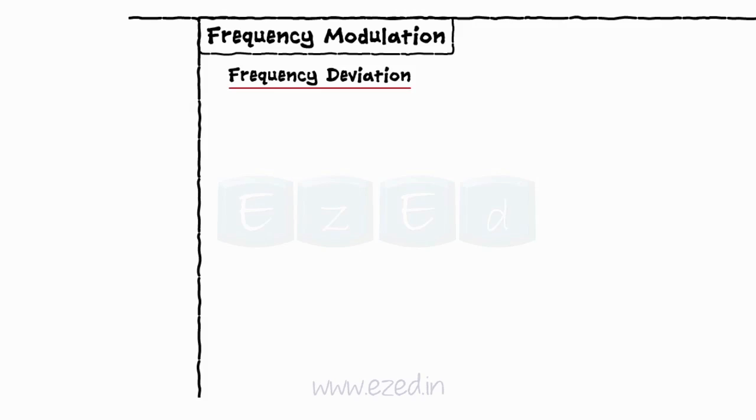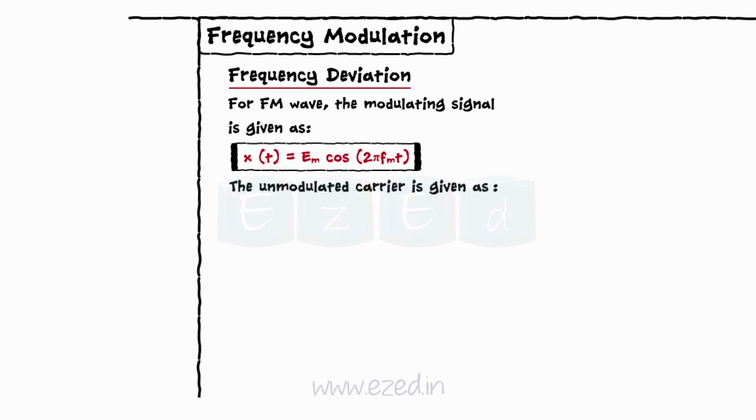The modulating signal is given as Xt equals Em cos 2 pi fm into t. The carrier signal is given as Ec equals A into cos omega c into t plus phi.